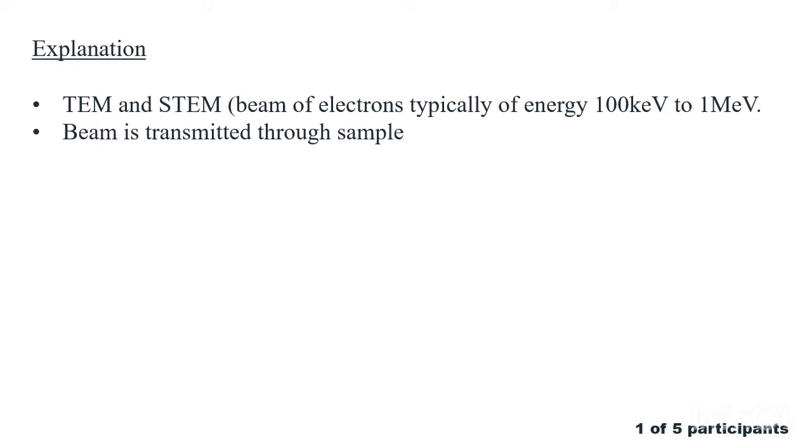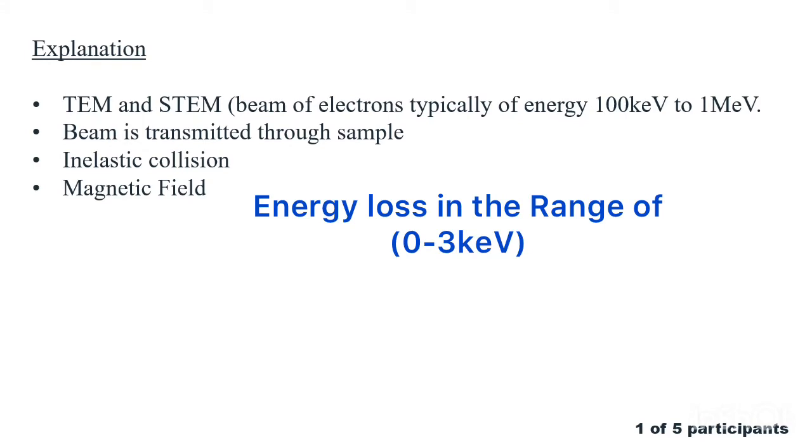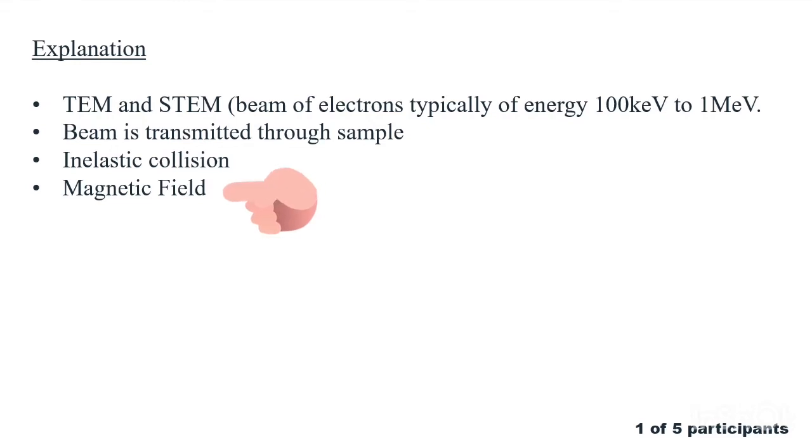The interactions which occur are elastic collisions or inelastic interactions where the primary beam of electrons collide with electrons from the sample. The loss of energy of primary electrons commonly used in EELS is in the range of 0 electron volt to 3 kiloelectron volt. This energy loss is measured using dispersive properties of a homogeneous magnetic field on the charged electrons in an electron energy loss spectrometer.